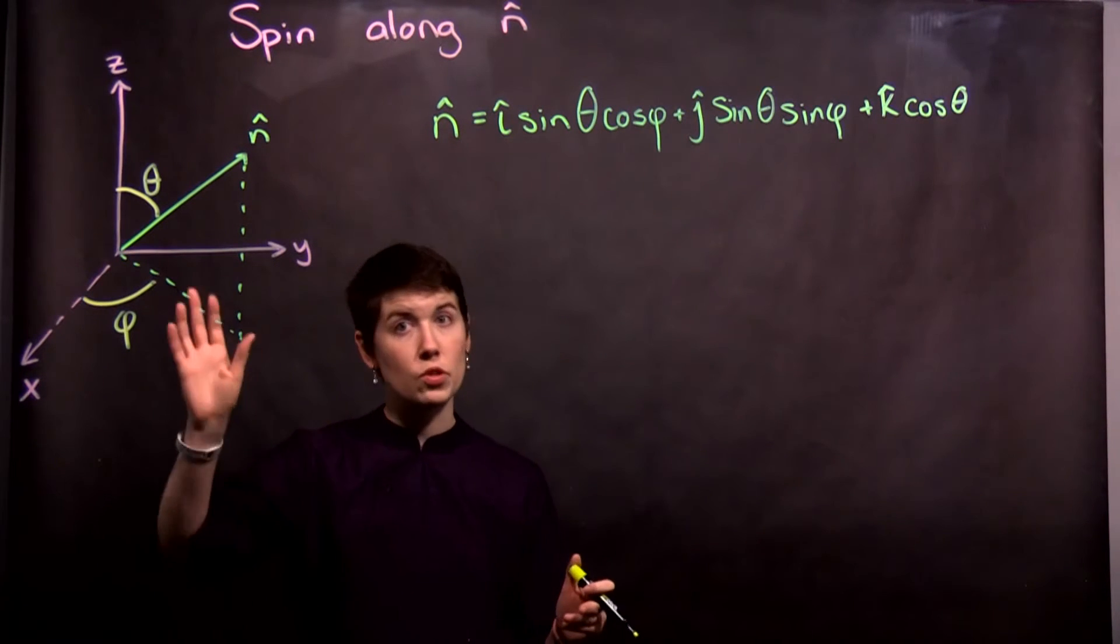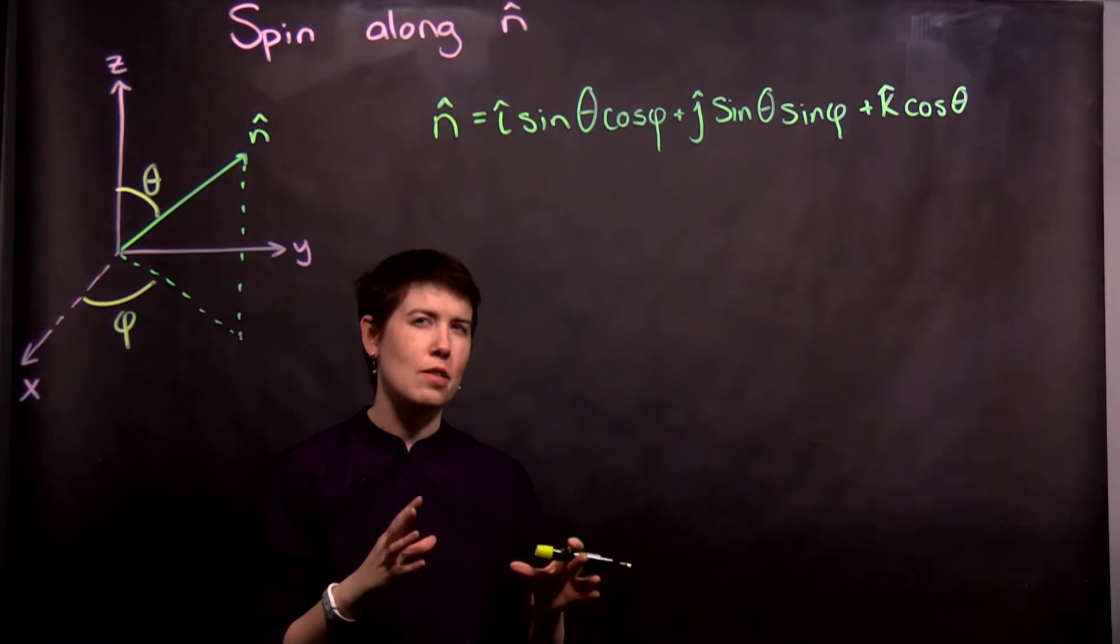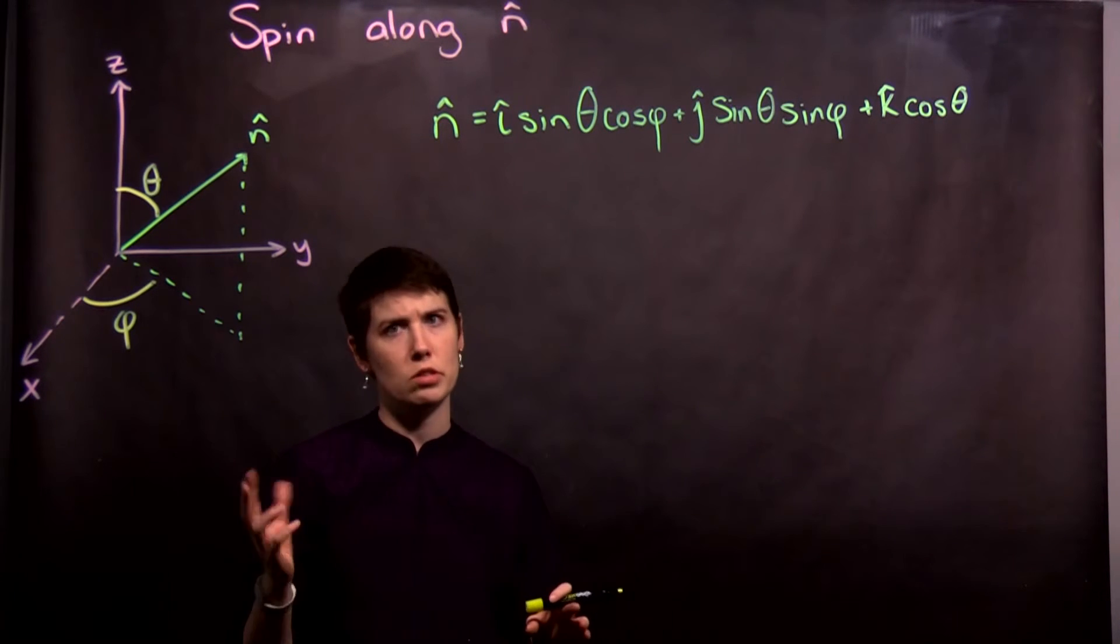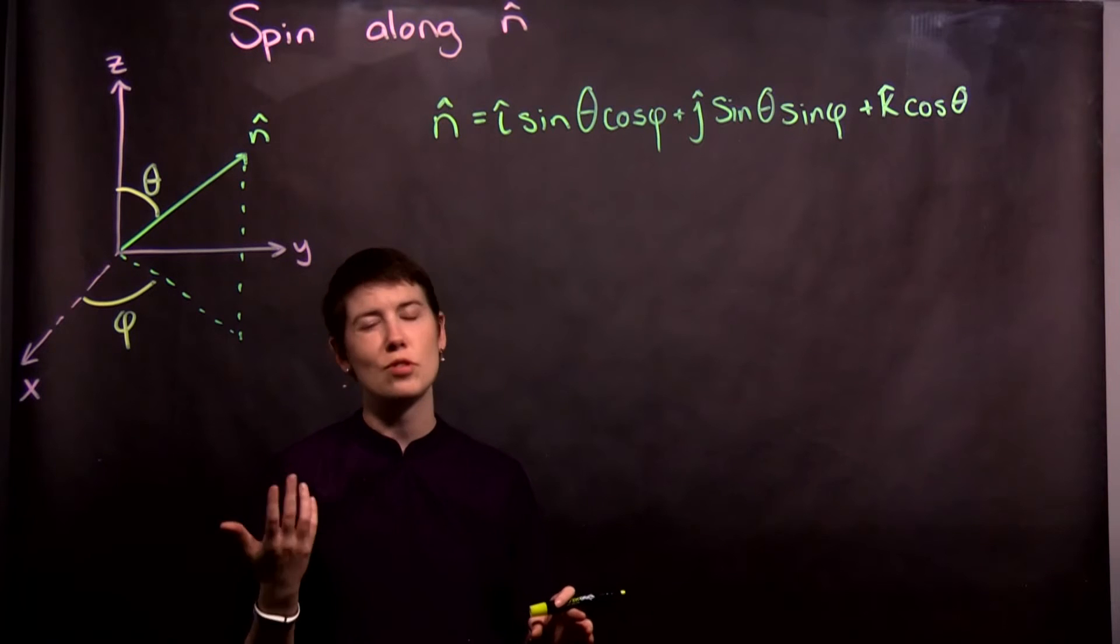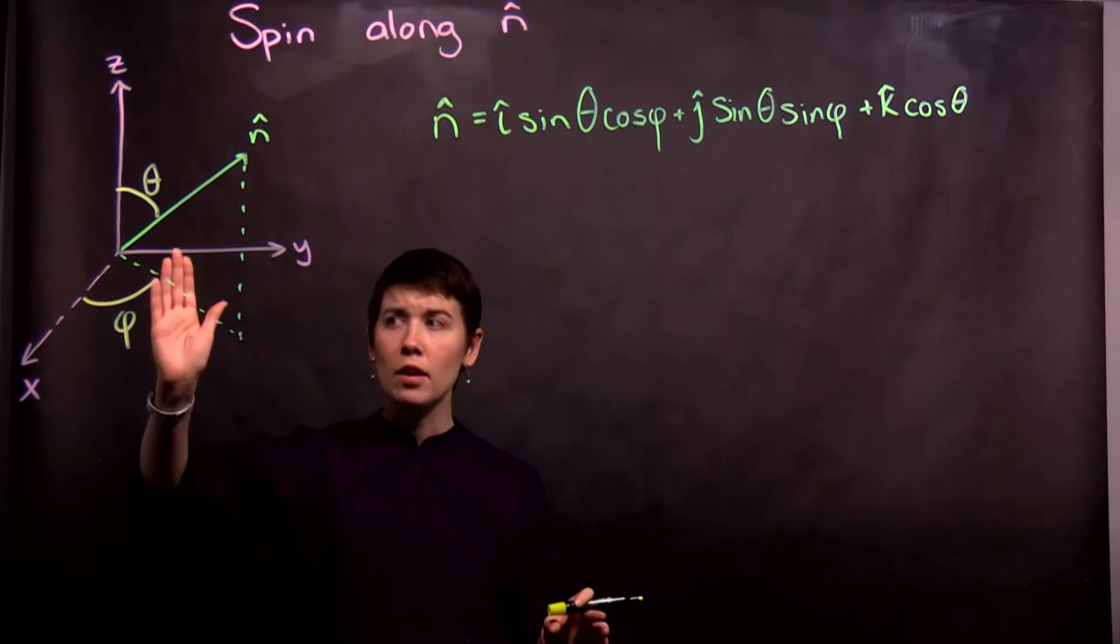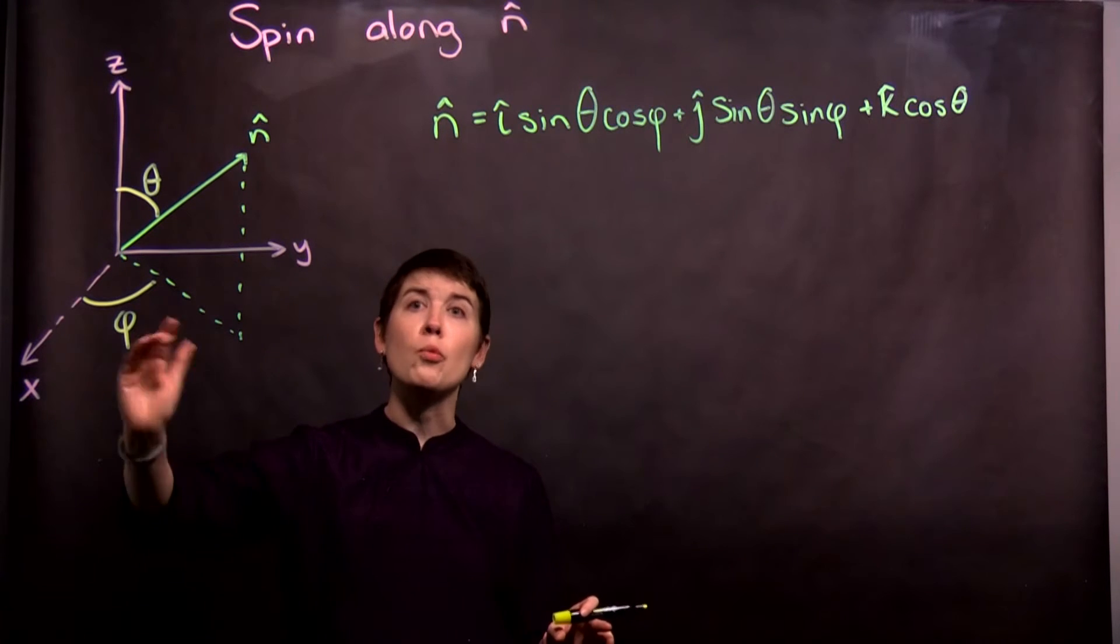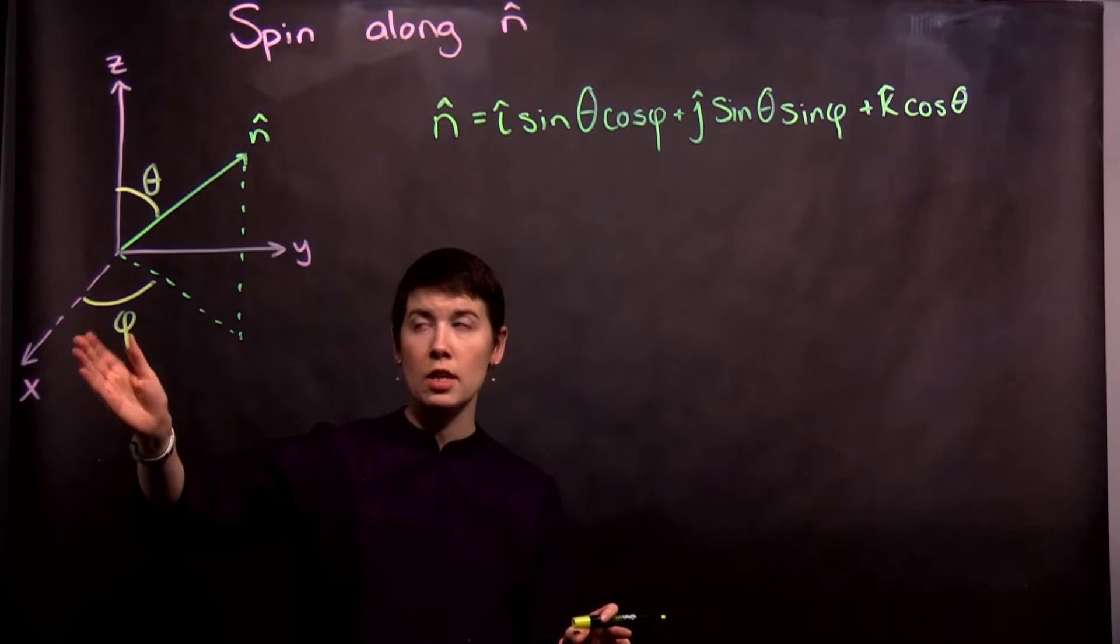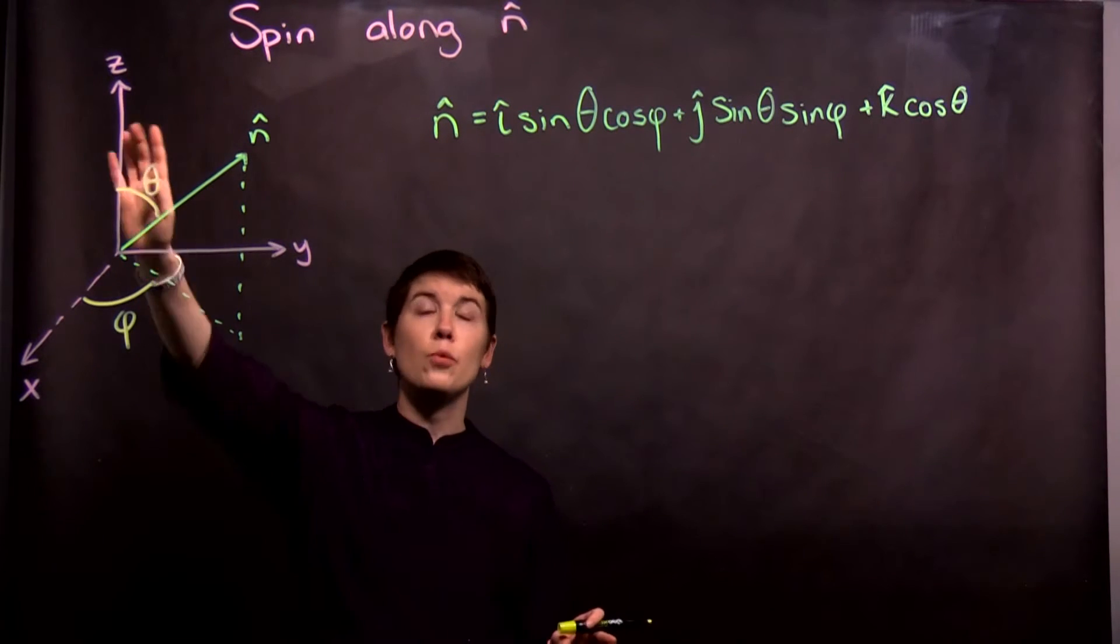The definition I'm using here matches the book. One thing to be careful about is that I think in some math textbooks the angular definitions are opposite, and I'm sure that there's some physics textbooks that use a different convention. So phi is going to be our angle with respect to the x direction, and then theta is our angle with respect to z.